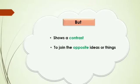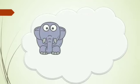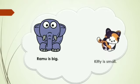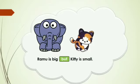Let's move to another conjunction — 'but.' The conjunction 'but' is used to show a contrast. It is also used to join opposite ideas or things. For example: Ramu is big. Kitty is small. Both sentences are opposite to each other, so with the conjunction 'but,' the new sentence is: Ramu is big but Kitty is small.